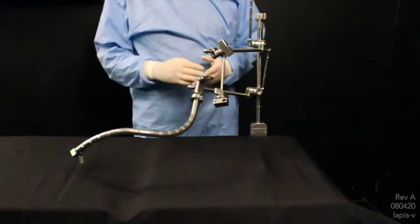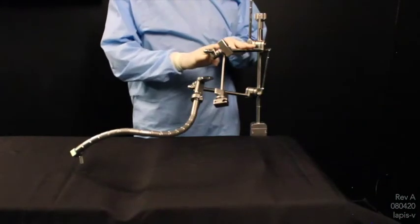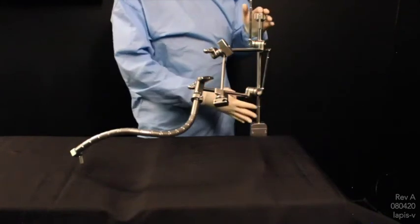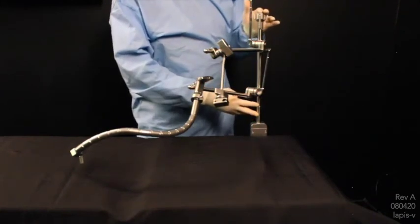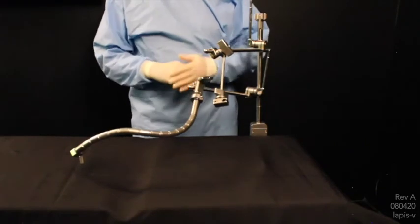If two laparoscopic arms are needed, being the flex and rigid, you will need the Elite Rail Clamp with two joints in order to accommodate both arms.